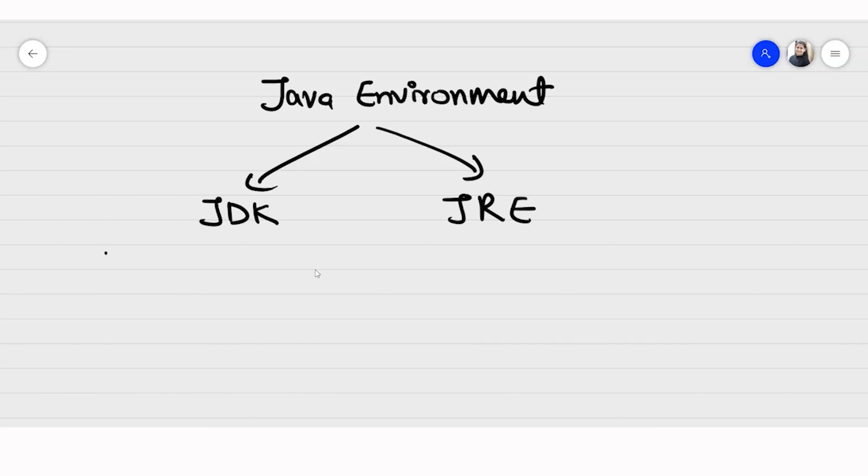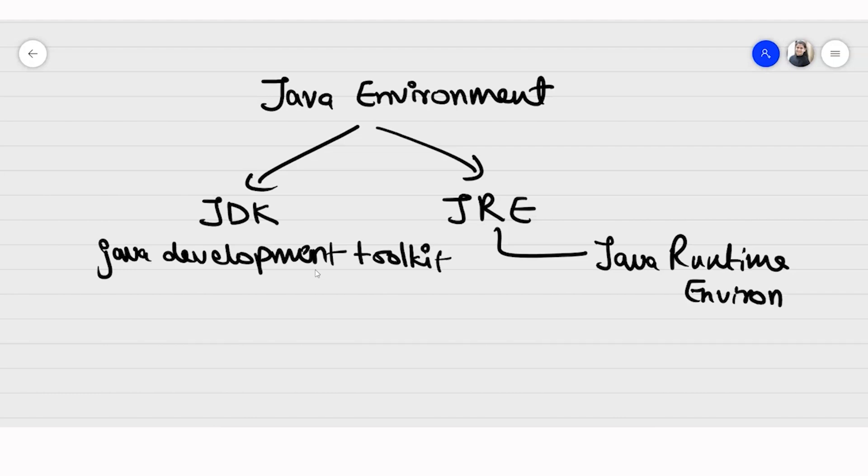JDK is known as the Java development toolkit, whereas JRE stands for Java runtime environment. So these are the two most important components that we need to have in our Java program or the Java program is running on this Java environment. These two components only.